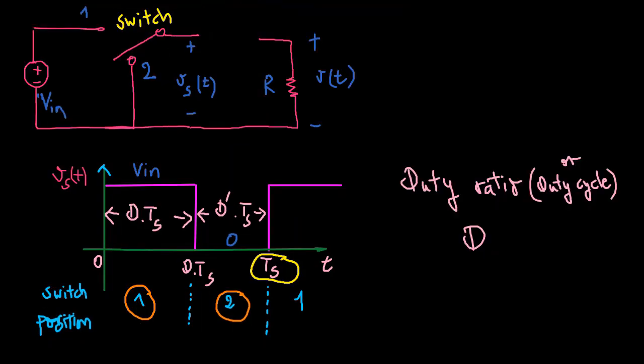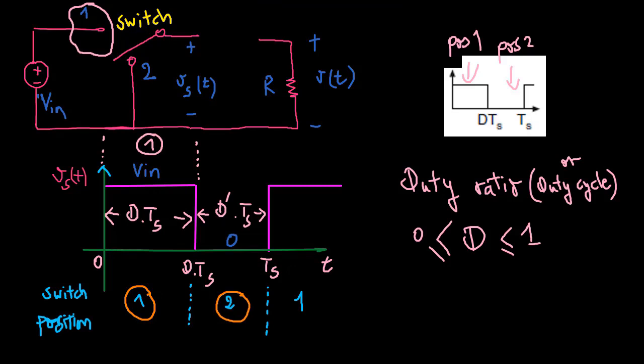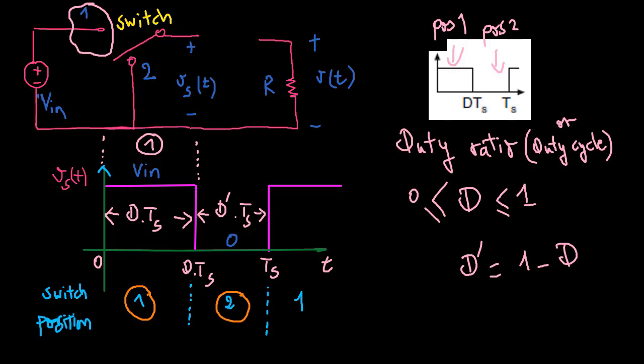The duty ratio D is the fraction of time that the switch spends in position 1 and is a number between 0 and 1. The complement of the duty ratio D' is defined as 1 minus D.